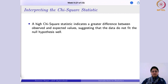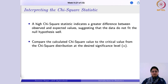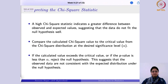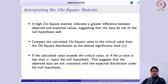A high chi-square statistic indicates a greater difference between observed and expected values, suggesting the data do not fit the hypothesized distribution well. You compare the chi-square value to the critical value at the desired significance level, or compute the p-value. If the calculated value exceeds the critical value, or the p-value is less than the significance level, we reject the null hypothesis and conclude that the observed data is not consistent with the expected distribution.